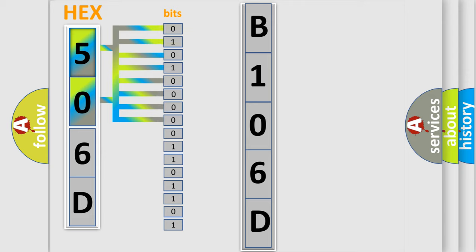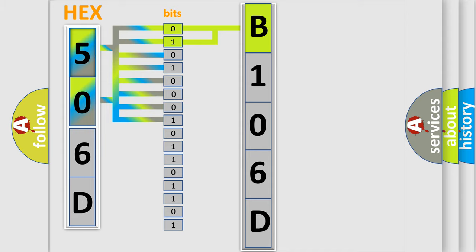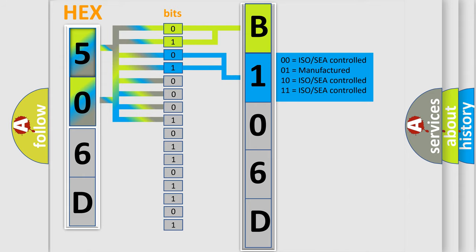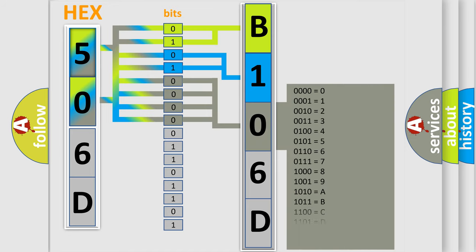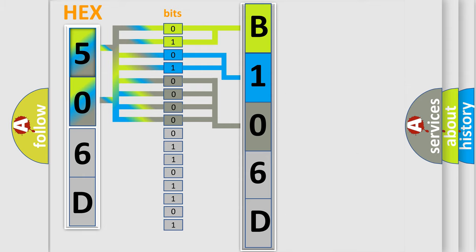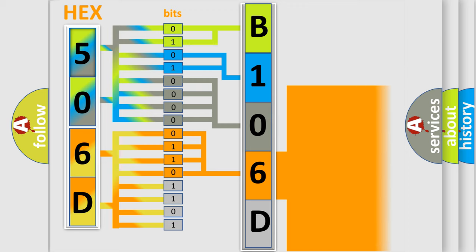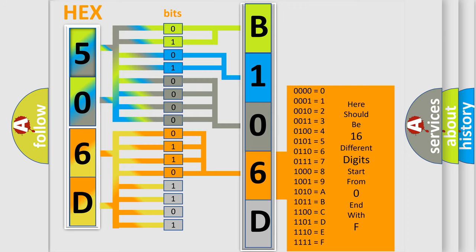The bit has two logical states: zero, which is a low level, and one, which is a high level. By combining the first two bits, the basic character of the error code is expressed. The next two bits determine the second character. The last bits of the first byte define the third character of the code. The second byte is composed of a combination of eight bits: the first four bits determine the fourth character, and the last four bits define the fifth character.